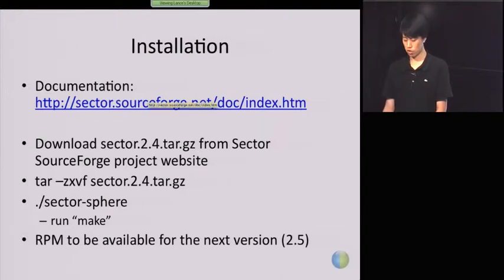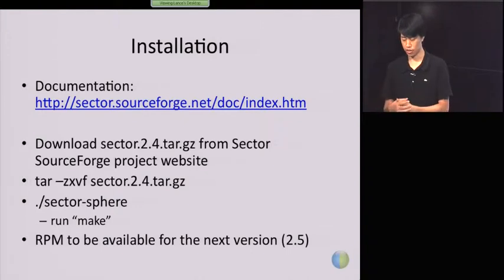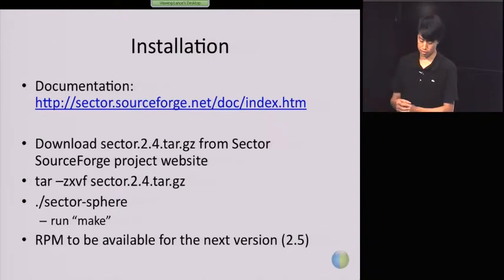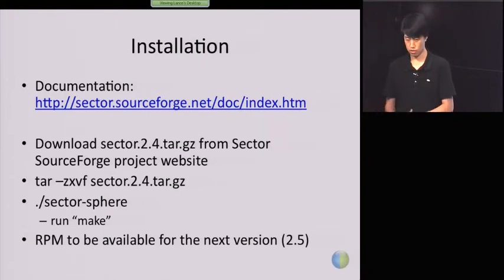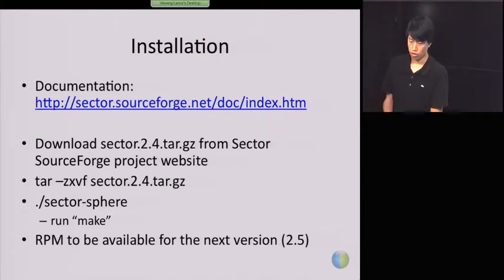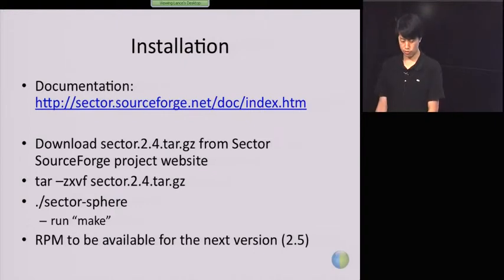There's also an online version of the documentation. Everything I explained here is from the documentation, but it's really a simple process. The current version is 2.4. You download it, untar it, and run make — just make sure you have OpenSSL and GCC version 3.4 or above, and you'll be able to successfully compile it.